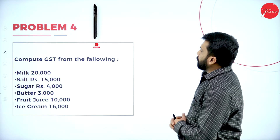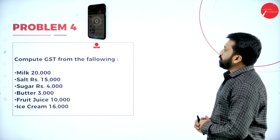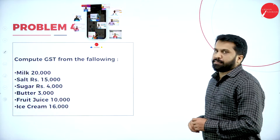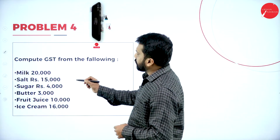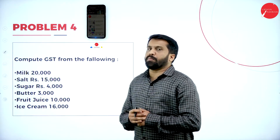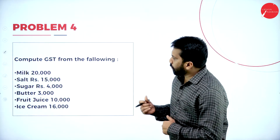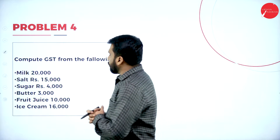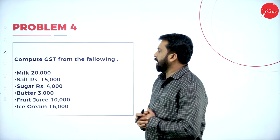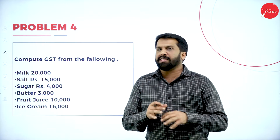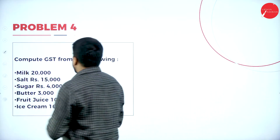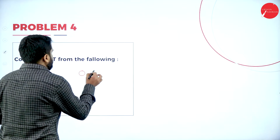This is Problem Number 1 — compute GST from the following. The items we have are: milk, salt, sugar, butter, fruit juice, and ice cream. What are the GST percentages for each? For milk, we go with zero percent.